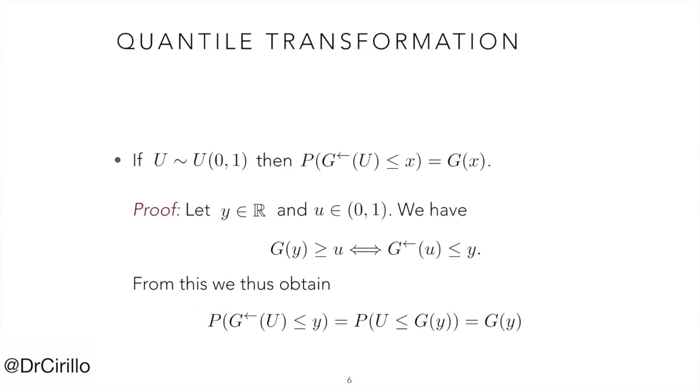The quantile transformation tells us that the quantiles of a uniform random variable with support on the interval can be linked to a distribution function G. In fact, the probability that the generalized inverse of U is smaller than or equal to a value Y corresponds to G of Y, where G is the distribution function on which we have defined the generalized inverse.